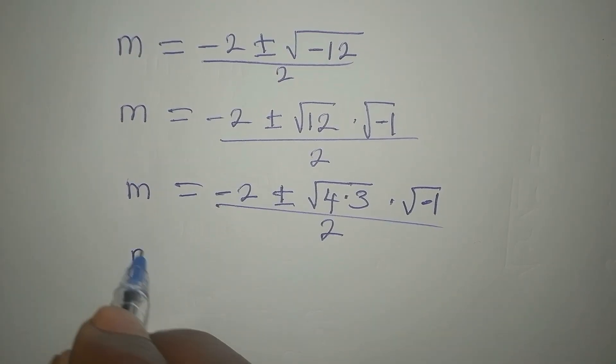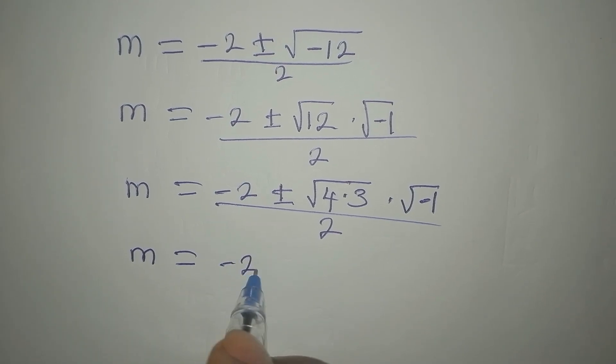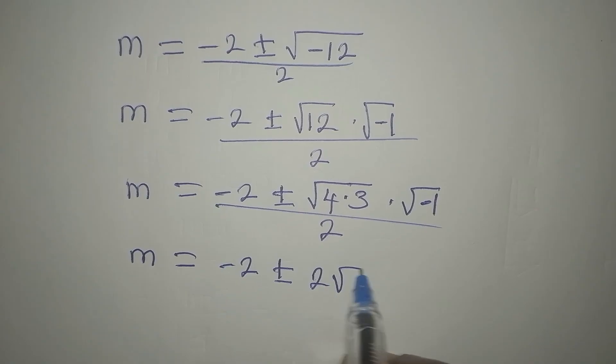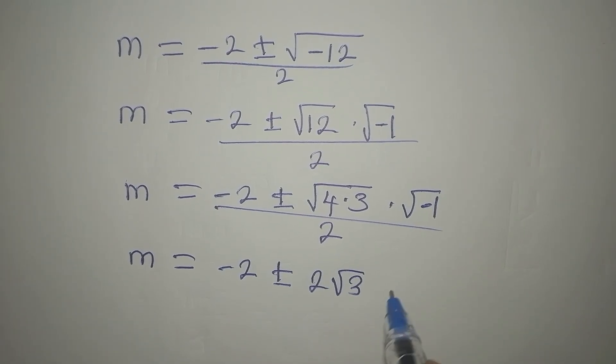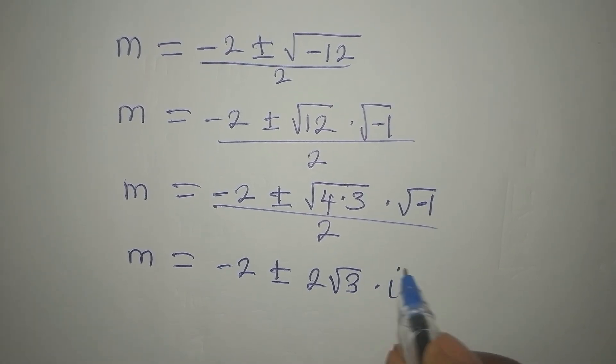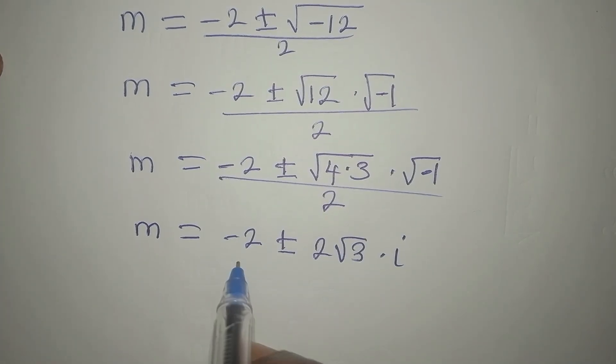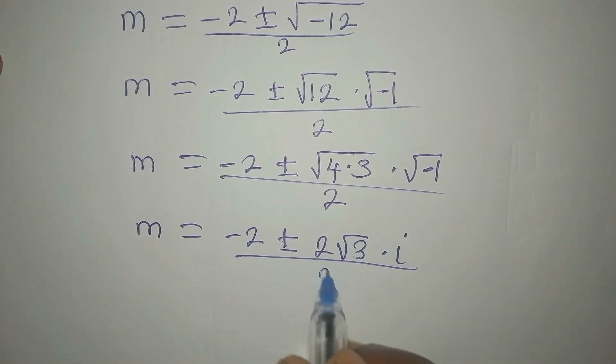Now, our m is minus 2, plus or minus, square root of 4 here is 2. Then root 3 will still be there. Then multiply by i, because square root of negative 1 is imaginary i. Then we divide this by 2.